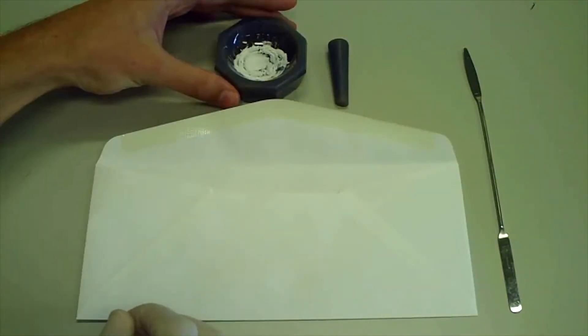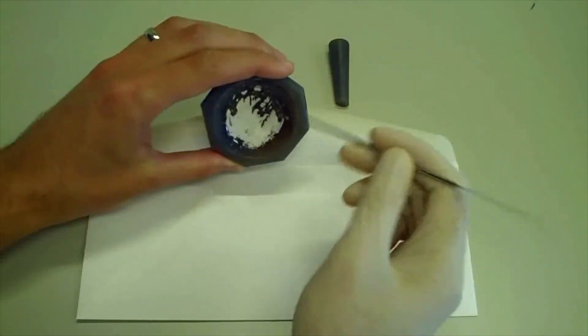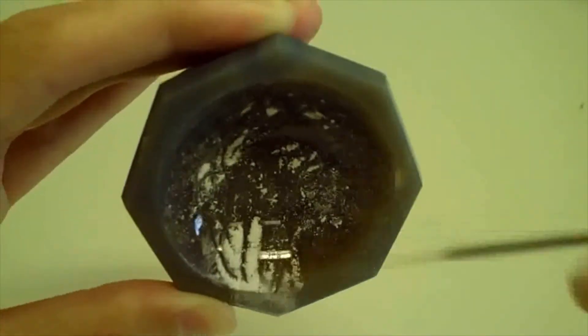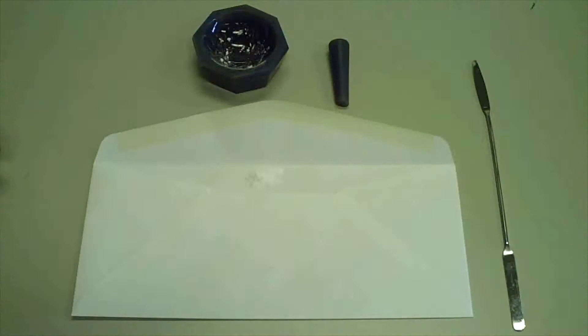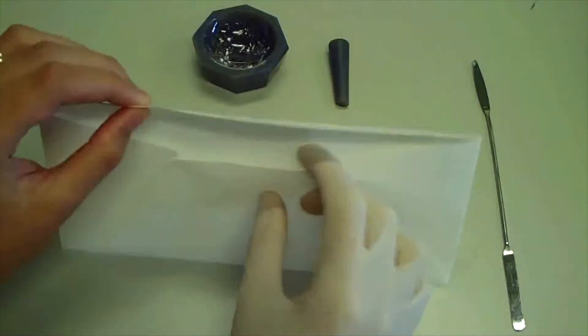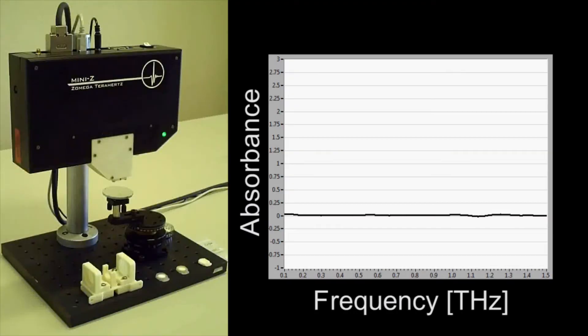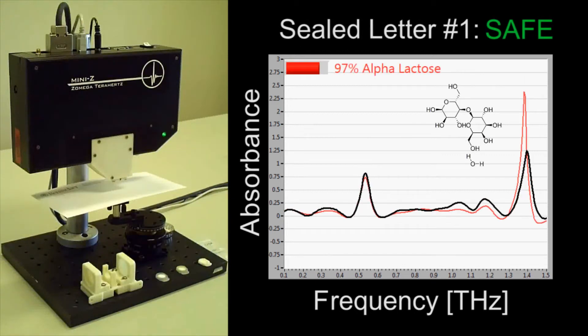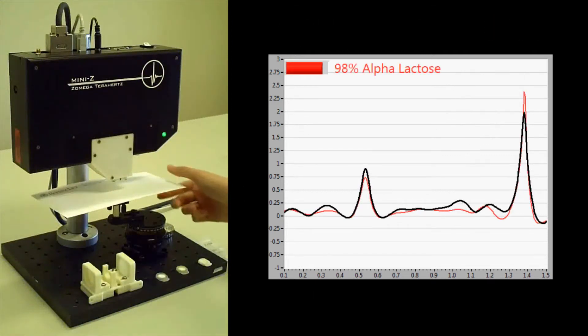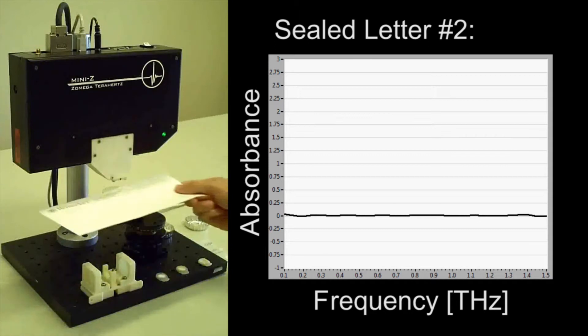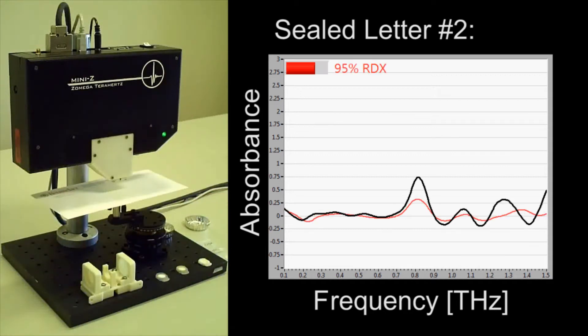Terahertz technology has already seen migration from the laboratory into commercial application. Here we demonstrate the inspection of two unknown powders inside two separate envelopes. The first envelope contains a harmless material, alpha-lactose, an ingredient found in milk. However, the second envelope contains RDX powder, which is an explosive material.